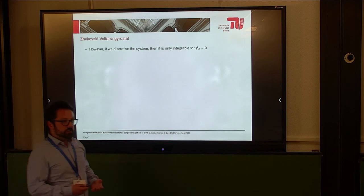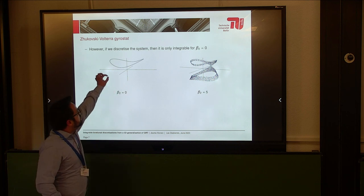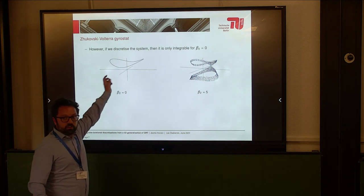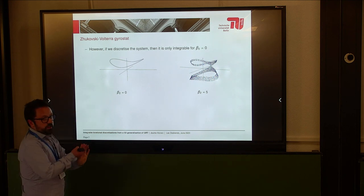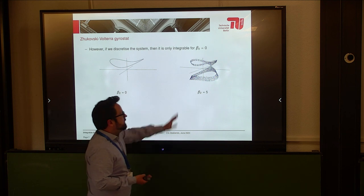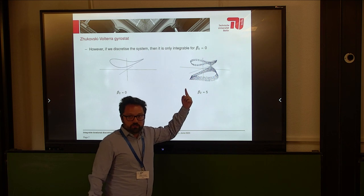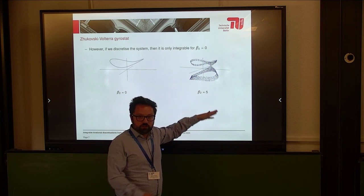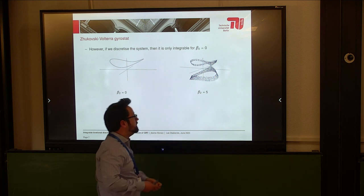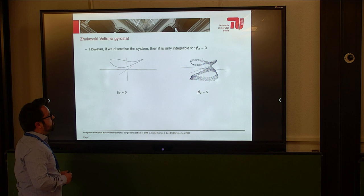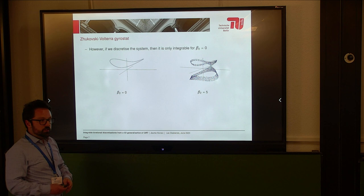Let's see what happens if we discretize this system. For beta two equals zero, we get many points — this looks like a line, but it's just many points. You clearly see it is restricted to the intersection of two things. But if I take any other value, for example five, then you see there must be one conserved quantity but not two. So the points are kind of restricted to a surface, but certainly not restricted to a curve. This is a problem: something that works in continuous systems does not work well on discrete systems.